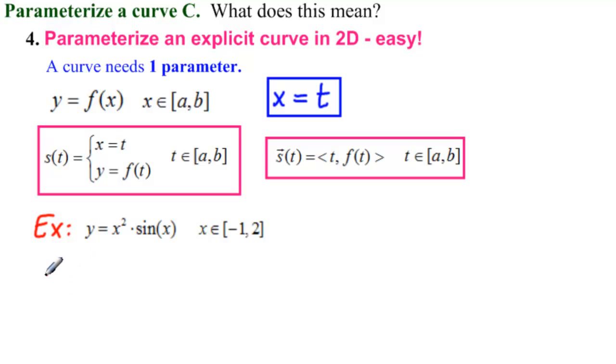So what do we write? We would write S of T. Let's presume we're going to write it in pure parametric form, so it's two functions. So the first one is X equals T. And the second one is Y equals,